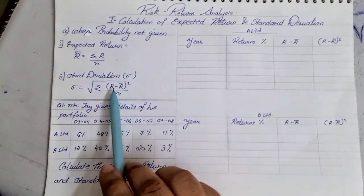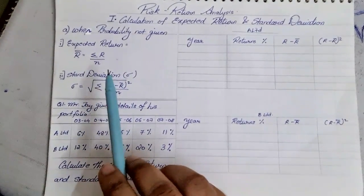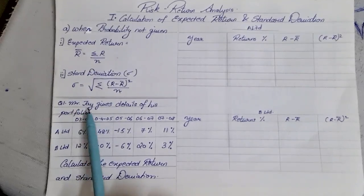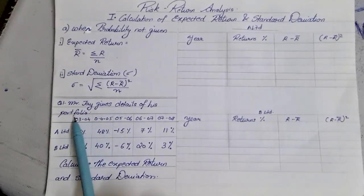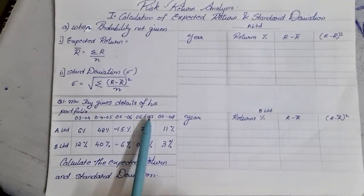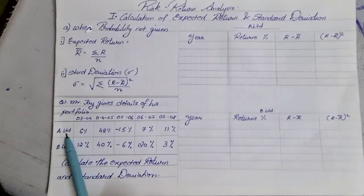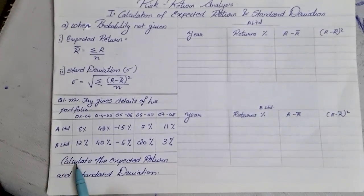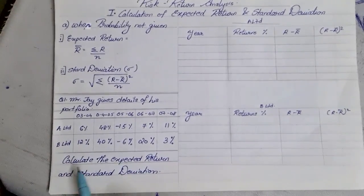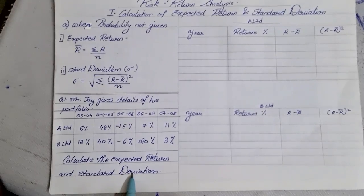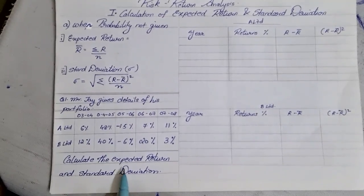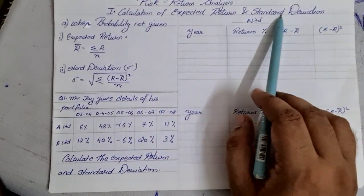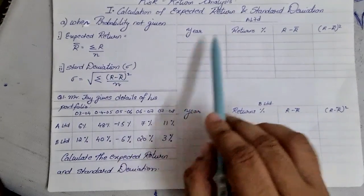Based on those two formulas, let us see how to solve the sum. The question given here is: Mr. J gives detail of his portfolio. There are multiple years and they are giving you returns of A Limited and B Limited. They are asking you to calculate the expected return and standard deviation. So let us start finding the expected return and standard deviation for A Limited.